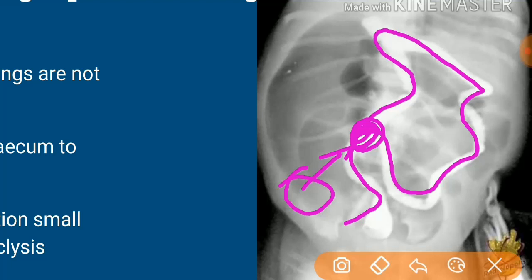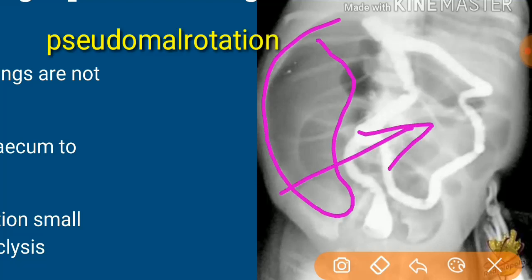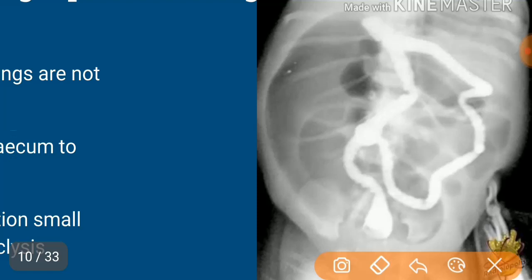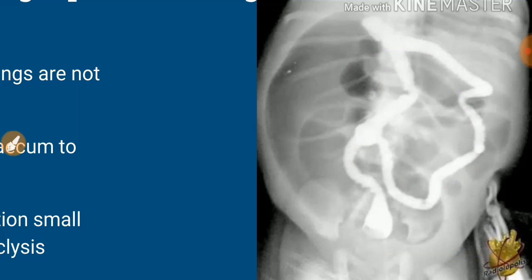In ileal atresia, there can be true malrotation, or there can be an entity known as pseudo-malrotation. In this case, there is a dilated ileal loop which is pushing the colon and cecum towards the midline, giving this pseudo-malrotation appearance. In true malrotation, we can see the cecum in an abnormal position, and then our diagnosis changes. This is the classical appearance of a barium enema in ileal atresia.